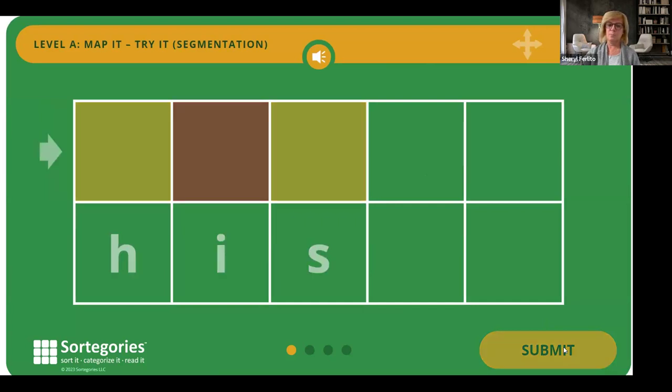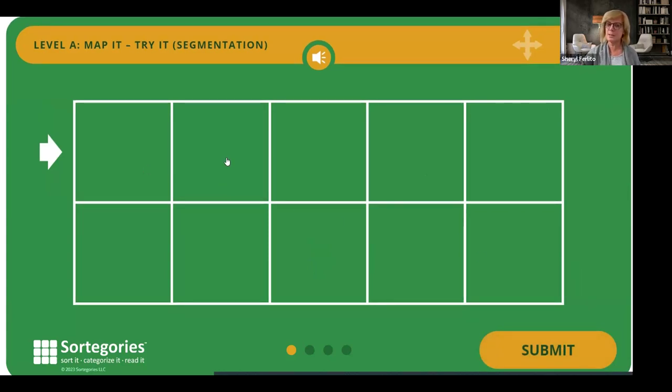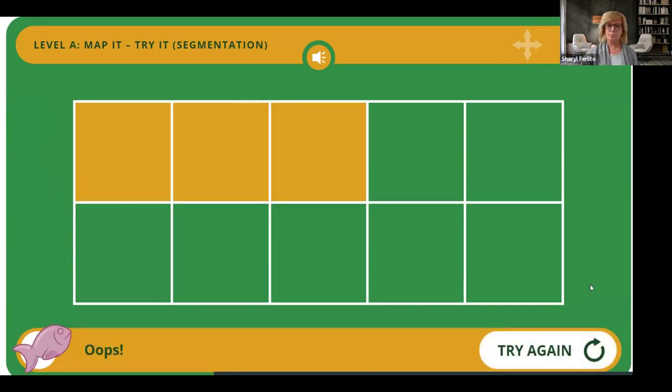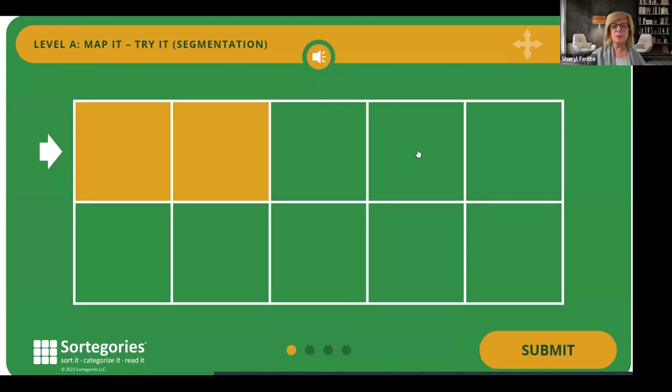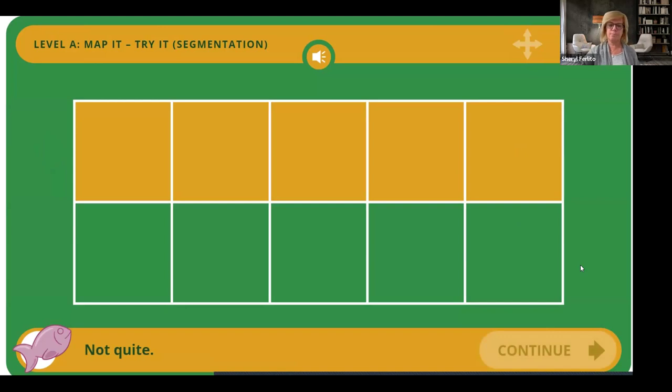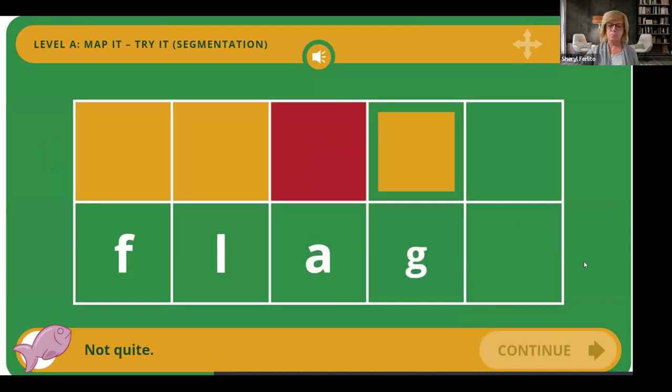The word is 'flag.' So in 'flag,' at first you hear a blend, so the inside sound is easy to miss. So I might get that one wrong. Oops. Click try again. The word is 'flag.' Let me try. F, l, a, g. Not quite. Oh, here. Flag has four sounds spelled with four letters. Flag. Shows me the right answer. Perfect.